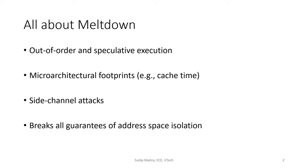Meltdown is a microarchitectural vulnerability that takes advantage of optimization techniques such as out-of-order and speculative execution. At the processor execution level, microops are executed out of order and some operations are executed speculatively for performance reasons. Such operations leave footprints at the microarchitectural level, such as cache access time, and side channel attacks can be mounted to read inaccessible memory space, which ultimately defeats all security guarantees provided by address space isolation, thereby undermining all the security measures built on top of this axiom.